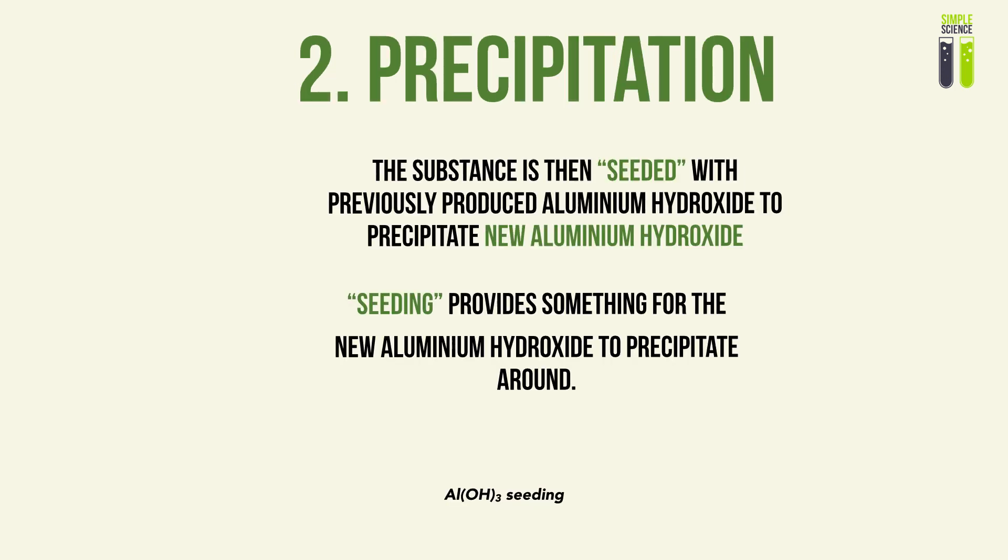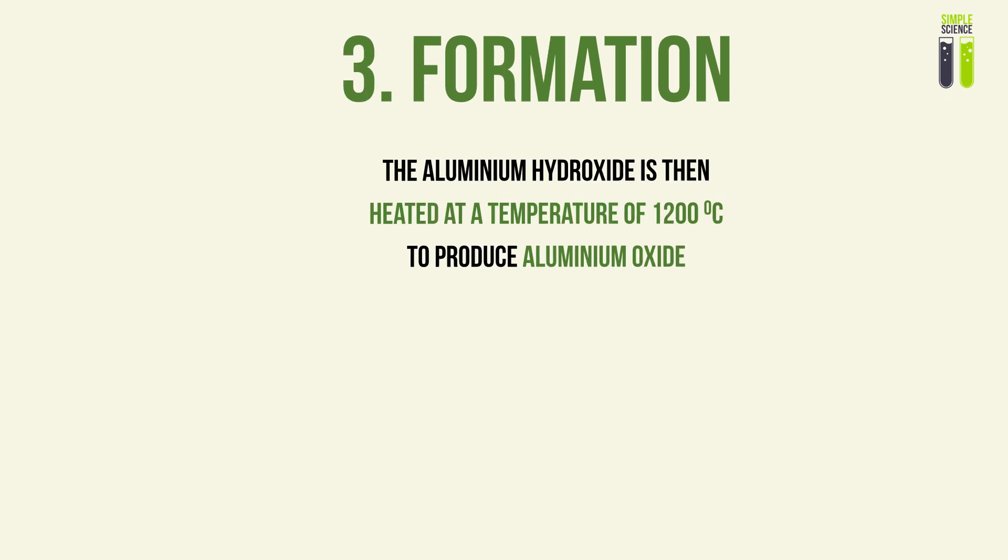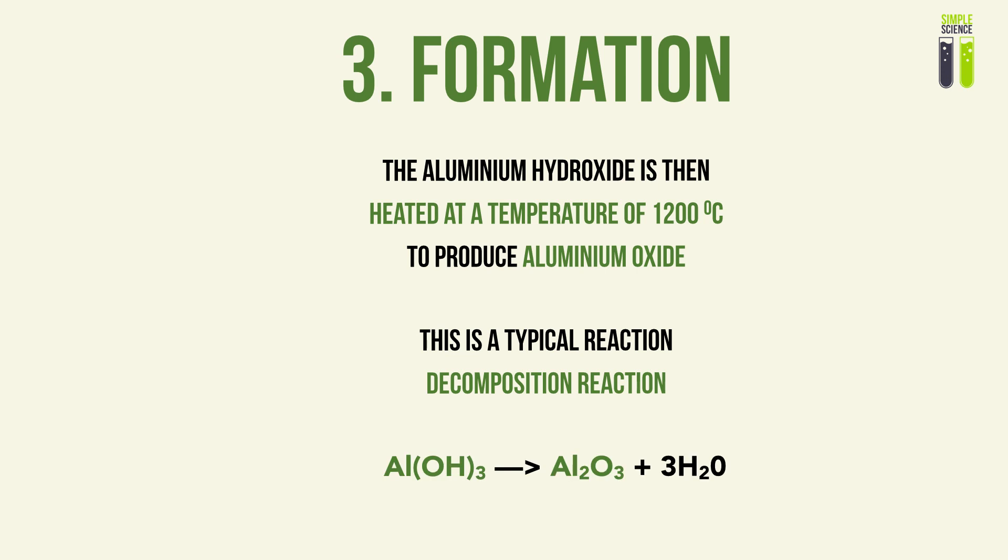After the sodium hydroxide treatment, the sodium tetrahydroxoaluminate is seeded with previously produced aluminium hydroxide. Seeding provides many small surface areas for aluminium hydroxide to be produced. The sodium tetrahydroxoaluminate is seeded with some previously produced aluminium hydroxide to produce new aluminium hydroxide and a byproduct of sodium hydroxide. After this precipitation step, the sodium hydroxide will be removed, and we proceed to form aluminium oxide — the substance we need to electrolyze.